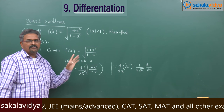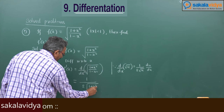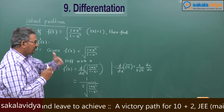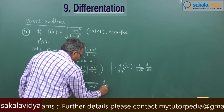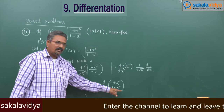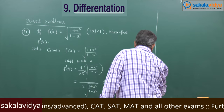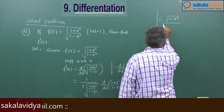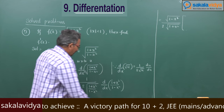Since u is 1 plus x square by 1 minus x square, this can be written as 1 by 2 root of 1 plus x square by 1 minus x square, into du by dx. Here du by dx is d by dx of 1 plus x square by 1 minus x square, performed using the u by v quotient rule. This gives root of 1 minus x square divided by 2 root of 1 plus x square, into the quotient rule expression.